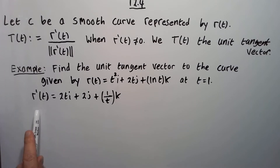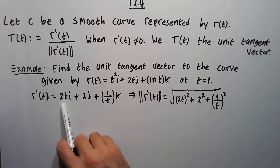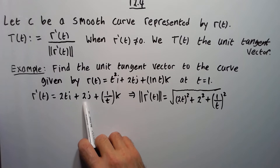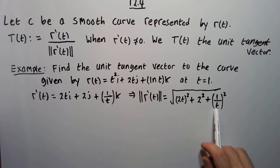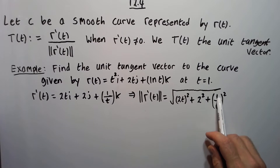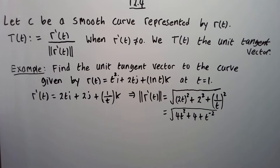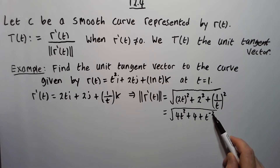Now let's find the magnitude of R prime. The magnitude of R prime is the square root of the i component squared — so 2T squared — plus the j component squared, 2 squared, plus the k component squared, 1 over T squared. Since 1 over T equals T to the minus 1, squaring gives T to the minus 2. So we get the square root of 4T squared plus 4 plus T to the minus 2.